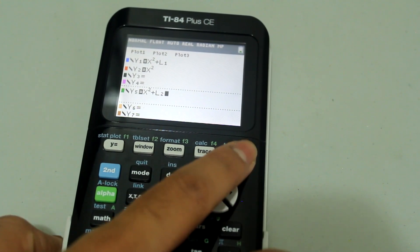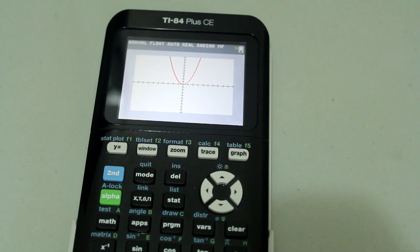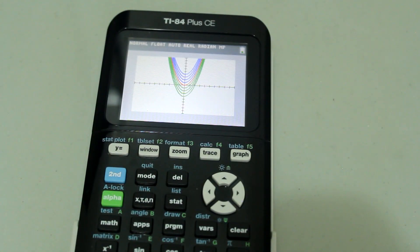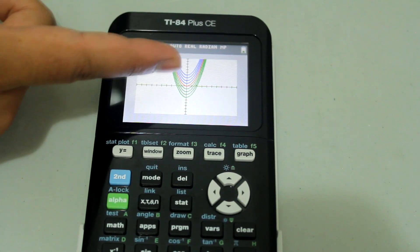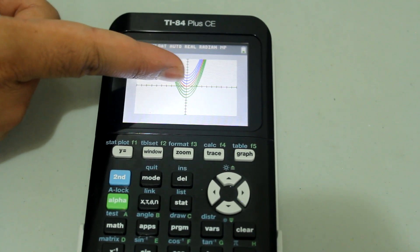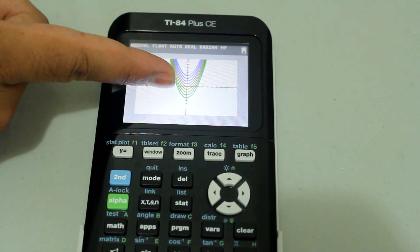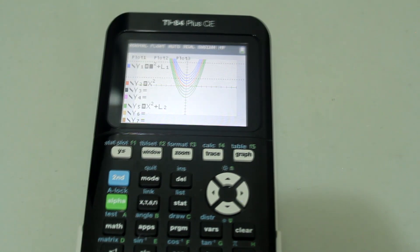Now if I go into graph, you end up getting this. The graphs that are shifted upward are in blue, the original is in red and the ones that are shifted down are in green.